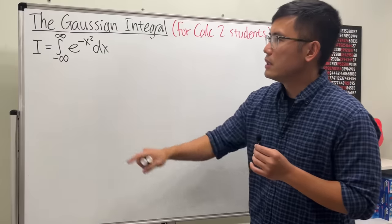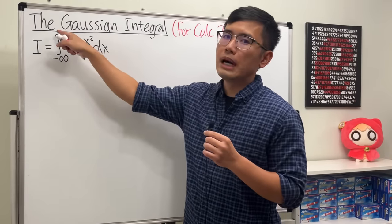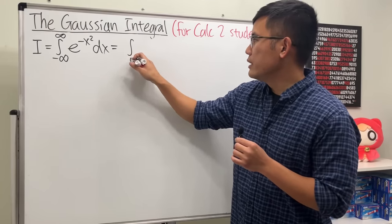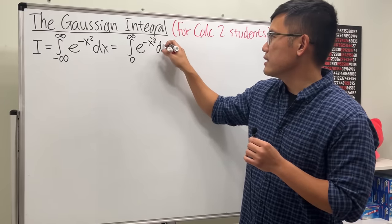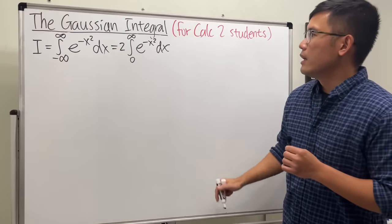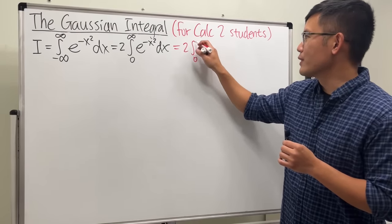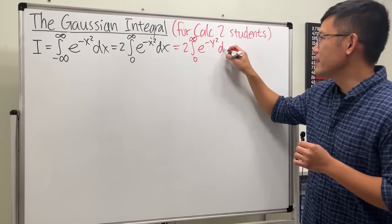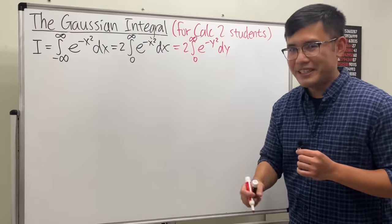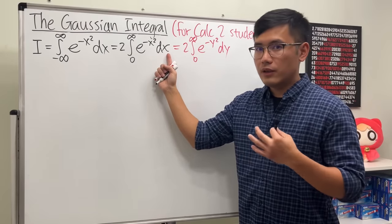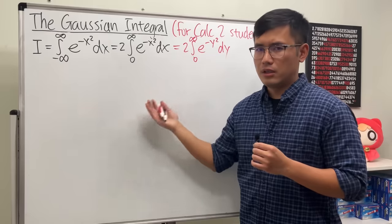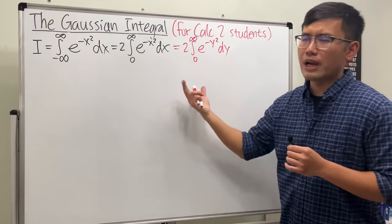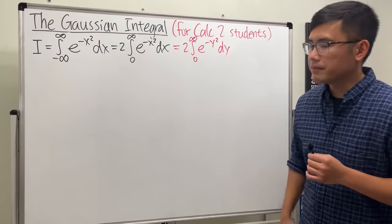Since e to the negative x squared is an even function, we can change this to the integral going from zero to infinity of e to the negative x squared dx and then double the result. We'll write that same integral again using y as the dummy variable — the integral from zero to infinity of e to the negative y squared dy. Both give the same output, square root of pi, since x and y are just dummy variables.